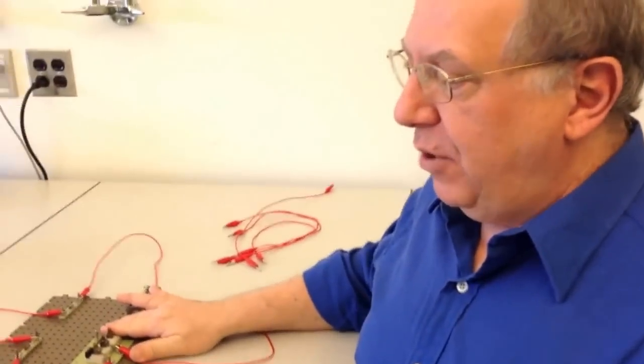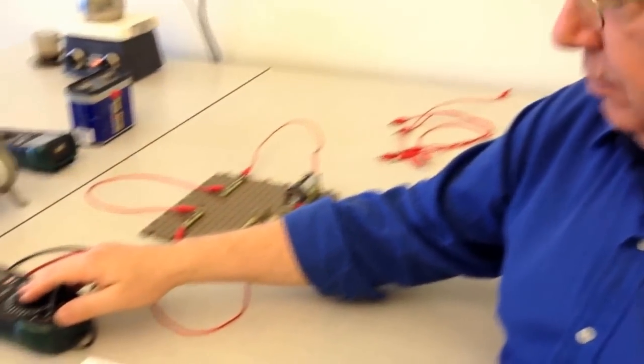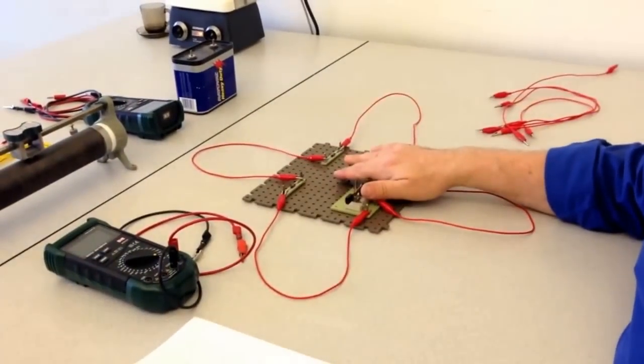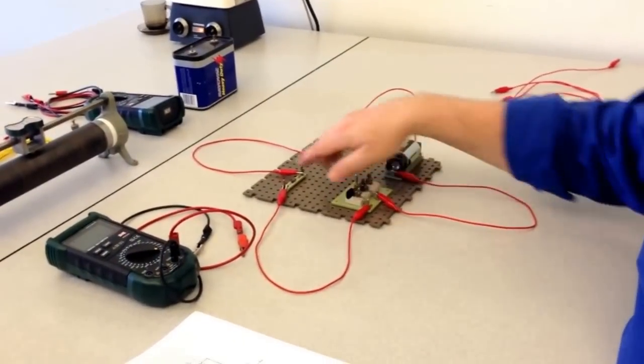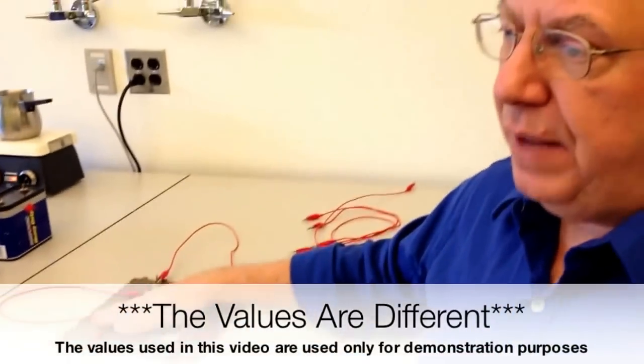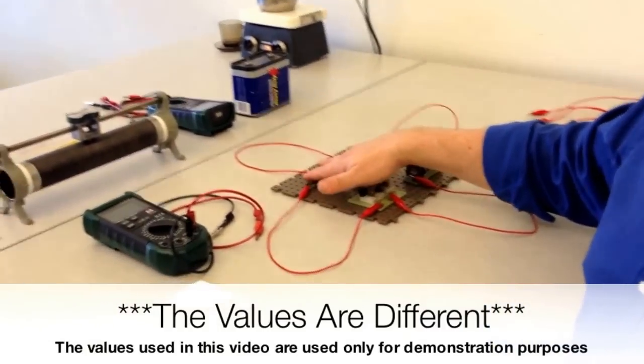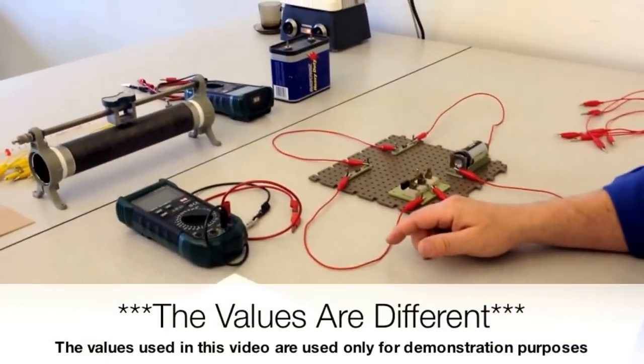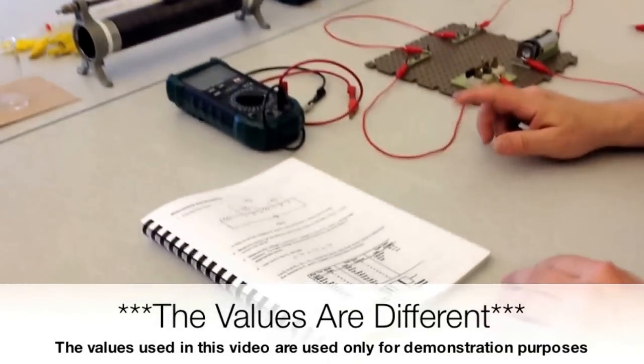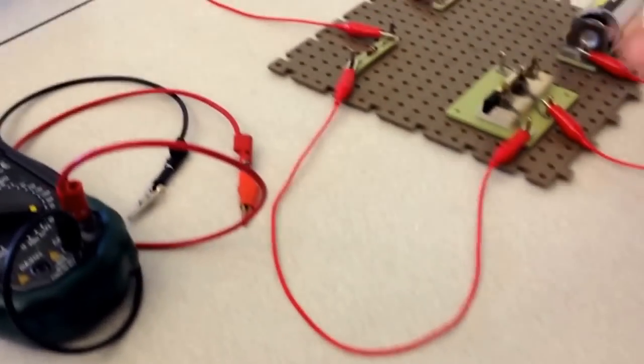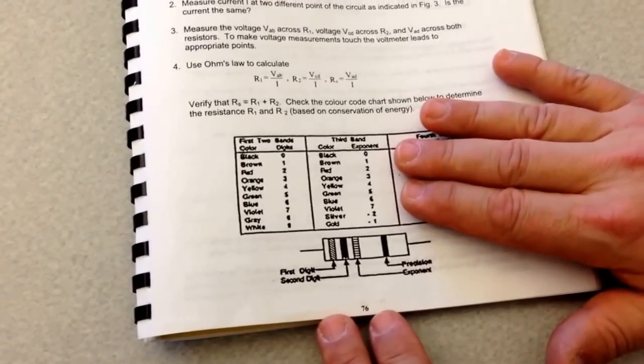So now you know how to use a multimeter, how to connect it as a voltmeter and ammeter into your circuit. And the values that we got for voltage across R1 and R2 and the current through the entire circuit will be different in your case, because the resistance values that we'll be using are going to be different in each table. Now let's continue on, and let me tell you something about the rated values of these resistors.